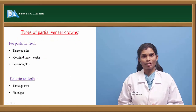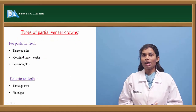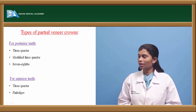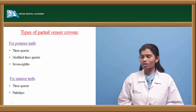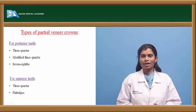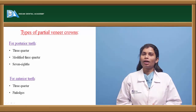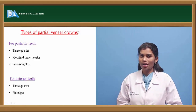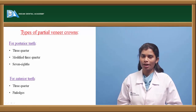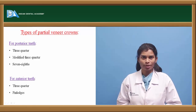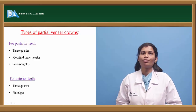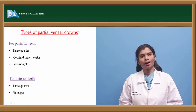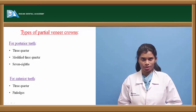Coming to types of partial veneer crowns, they are divided according to the area. For posterior teeth: 3-quarter crown, modified 3-quarter crown, 7-8 crowns, and a proximal half crown. For anterior teeth: a 3-quarter crown or pin ledges.